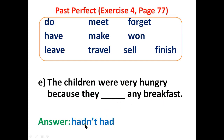'Hadn't' is the helping verb; 'had' is the past participle of the action verb 'have'. The children were very hungry because they hadn't had any breakfast.